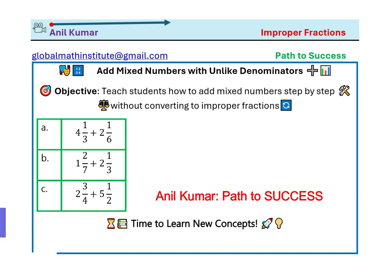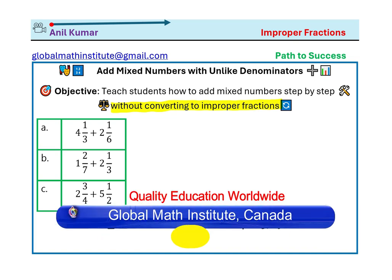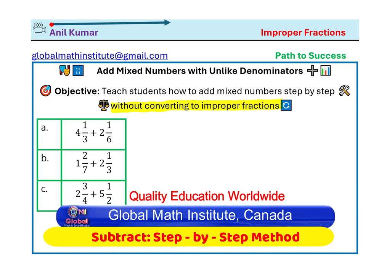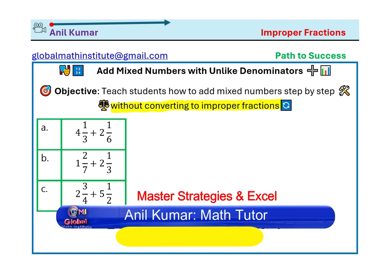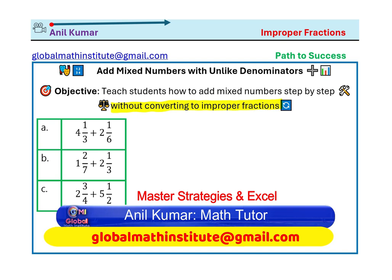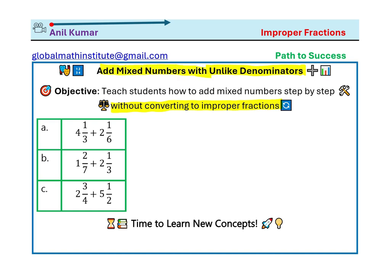Let us understand a great strategy of adding mixed numbers without converting to improper fractions — that's the key. We will not be converting mixed numbers into improper fractions; we'll go for a straight addition. Three different examples illustrate all three cases you get when talking about unlike denominators. So we are adding mixed numbers with unlike denominators.